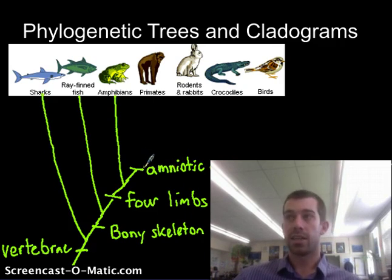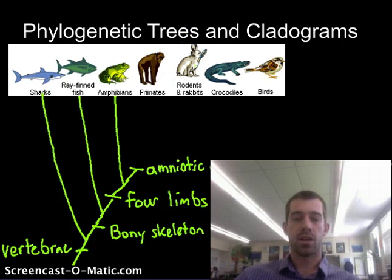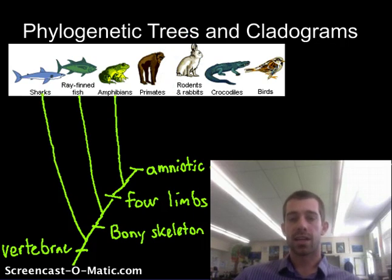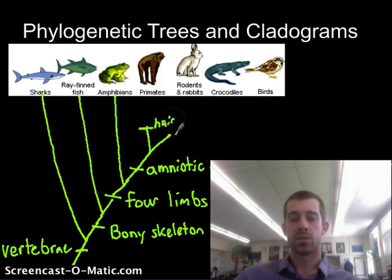Now it's going to get a little more complicated, because when we look at these remaining animals, we see that some traits separate them. The primates and rodents both have hair, whereas crocodiles and birds do not have hair. So we need to split the whole thing here — along one branch, hair develops, and along the other branch, hair does not develop.